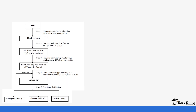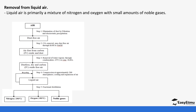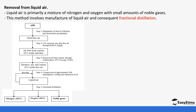The best alternative is fractional distillation of air, which is an industrial process that produces a highly concentrated and relatively pure amount of nitrogen compared to the previous process. Liquid air is primarily a mixture of nitrogen and oxygen with small amounts of noble gases — which is why this is called fractional distillation of liquefied air. The air is first liquefied and then fed to the fractionating column, which is where the name comes from.